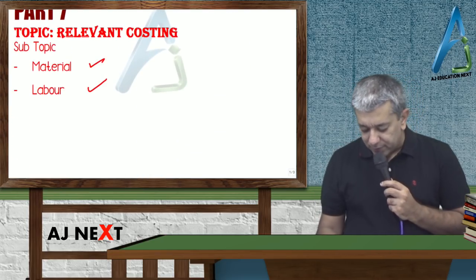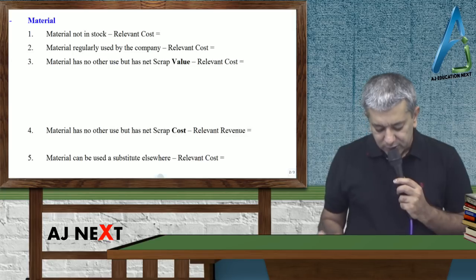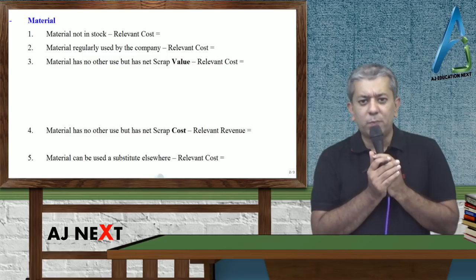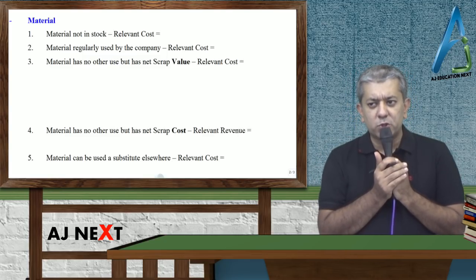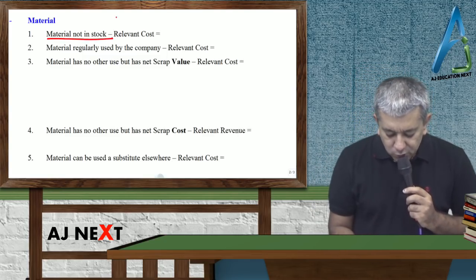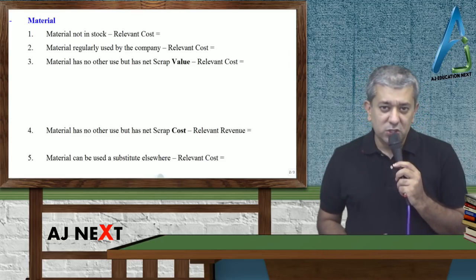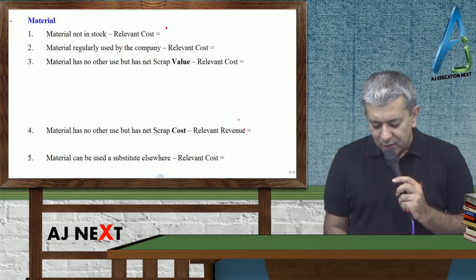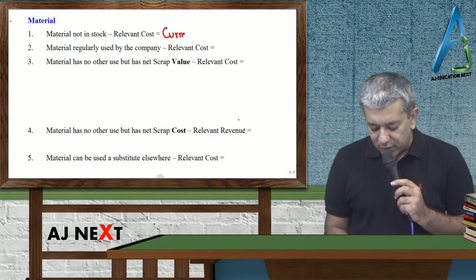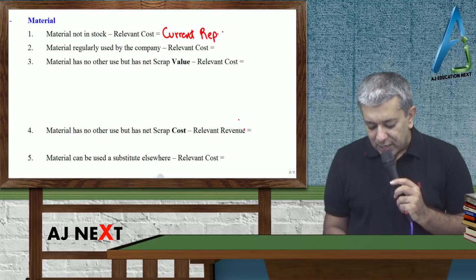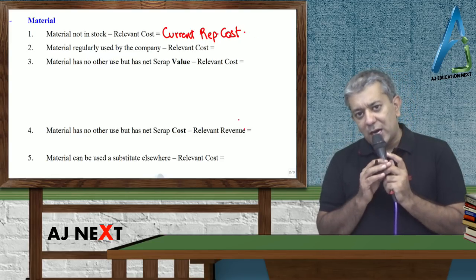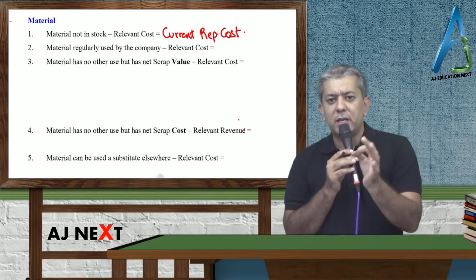Let's start. Our focus today is only on material and labor. First, suppose a proposal comes for which you need material, but that material is not in stock. What will be the relevant cost? Sir, you go to the market and buy. If you go to the market and buy, whatever will be the cost, that will become relevant cost. That thing is called current replacement cost.